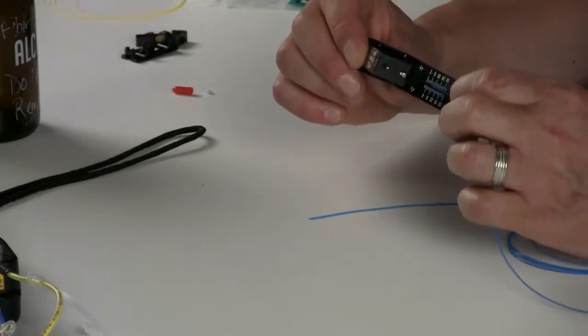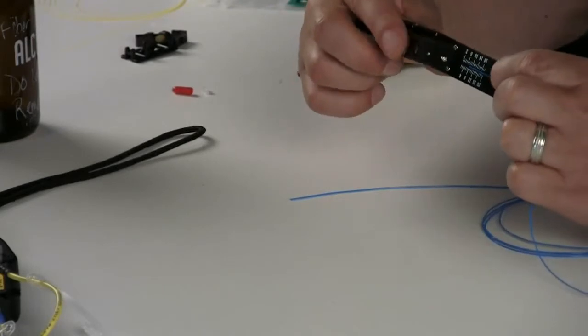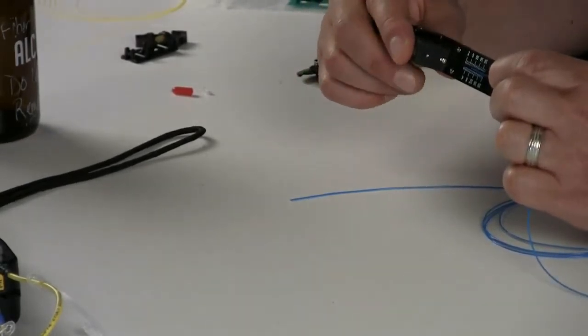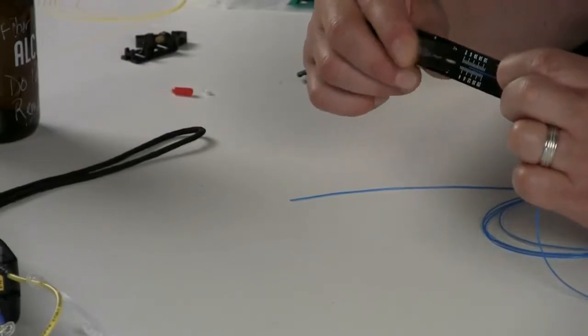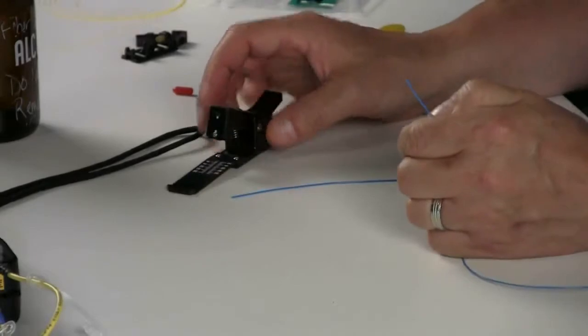You hold it taut with your thumb and forefinger and you take the hammer. You don't slam the hammer down, you just touch it so it will score the fiber. And then you bend the tail in order to produce a cleave.